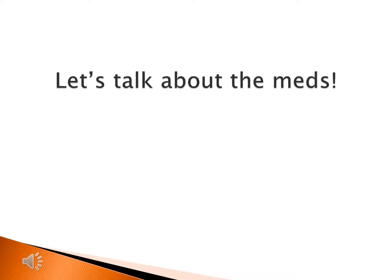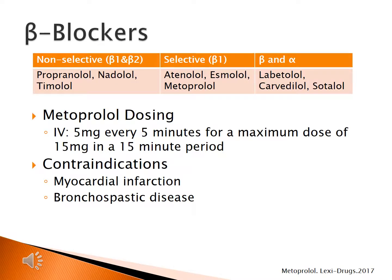Our beta blocker of choice is metoprolol, a selective beta-1 adrenergic receptor blocker. It should be dosed at 5 mg IV every five minutes for a maximum of 15 mg over 15 minutes. Onset of action is approximately 20 minutes. Relative contraindications include myocardial infarction and bronchospastic disease. For patients with asthma, consider severity: severe cases should avoid beta blockers, but mild cases may still use metoprolol given its beta-1 selectivity.